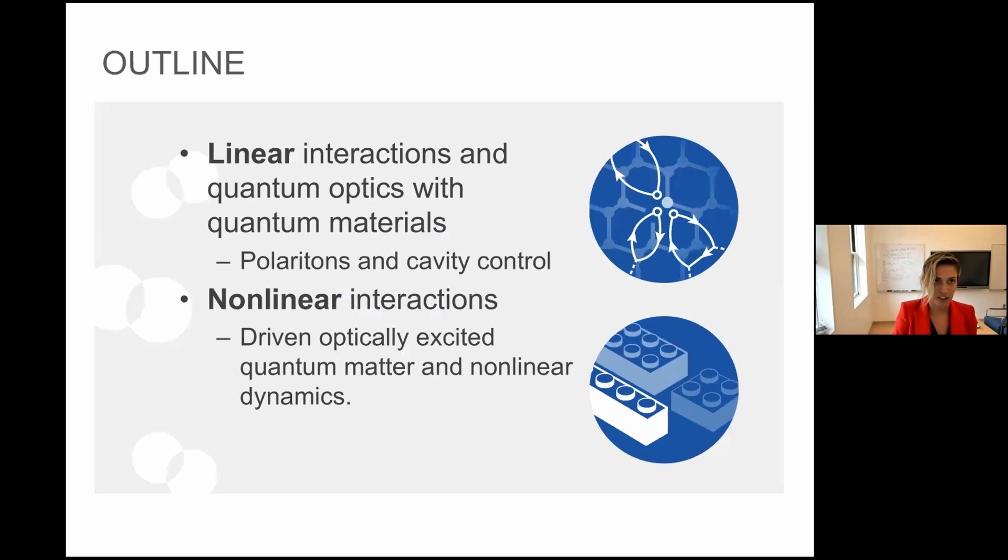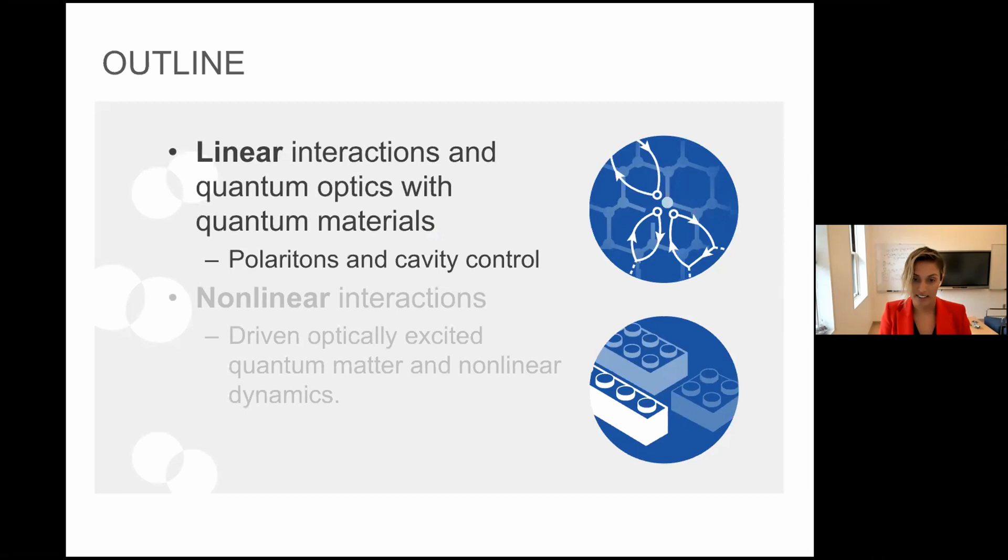So let's go from this discussion of methods where current methods can and cannot predict what we are interested in to actually looking at some examples. I have two examples for you. I'll start with the linear kind of regime where we talk about strong coupling to the cavity and what it does to the molecules, and then I'll go into an example where we do something similar with a 2D system.